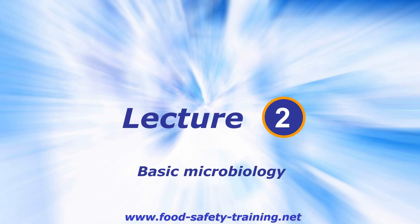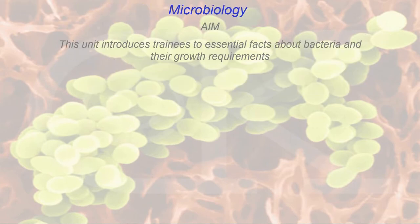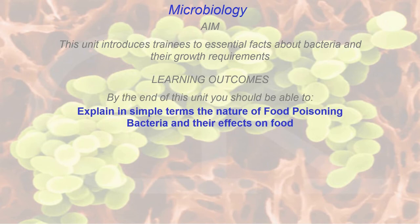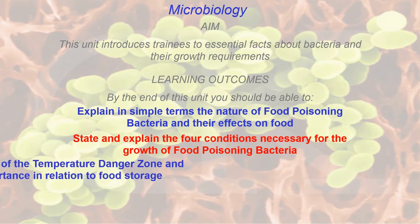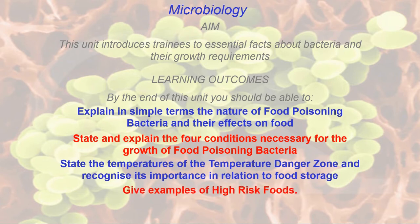Let's go into lecture two, which is basic microbiology. The aim of this unit is to introduce you to essential facts about bacteria and their growth requirements. The learning outcomes: by the end of this unit you will be able to explain in simple terms the nature of food poisoning bacteria and their effects on food, state and explain the four conditions necessary for the growth of food poisoning bacteria, and state the temperatures of the temperature danger zone.